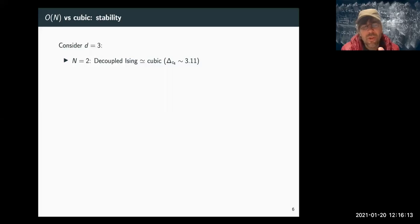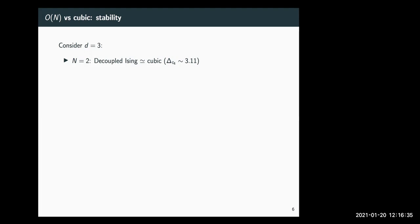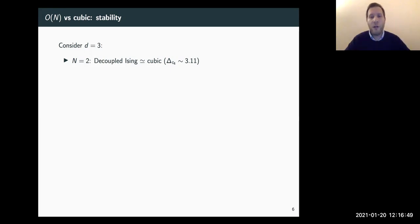A question arises: is there a non-perturbative way to argue that this equivalence still holds down to D equal to 3? The cubic group for N equals 2 is a dihedral group of eight elements, so by symmetry you cannot say that. As you move in epsilon, the spectrum changes continuously — it's a purely Lagrangian statement at this level. For N equal to 2, we know the T4 operator dimension is 3.11 from Monte Carlo, confirming it is irrelevant.